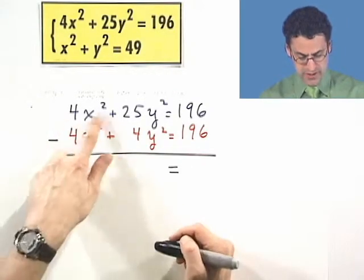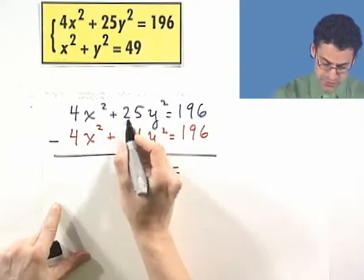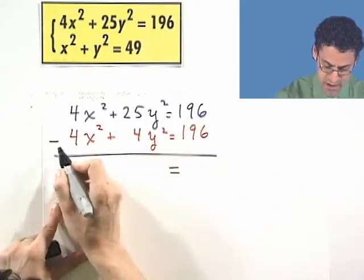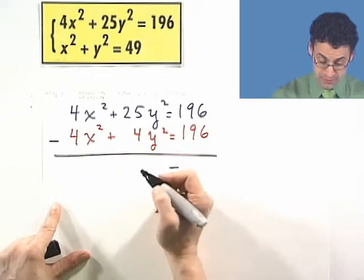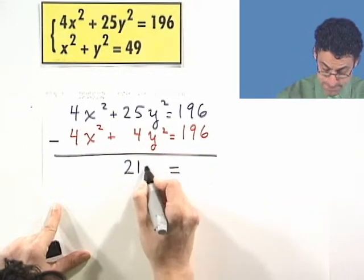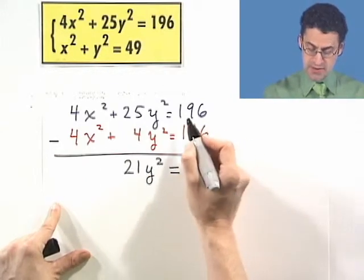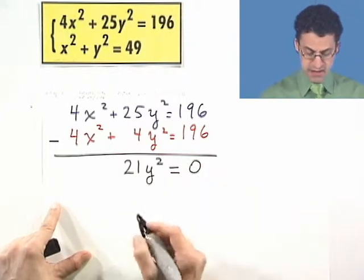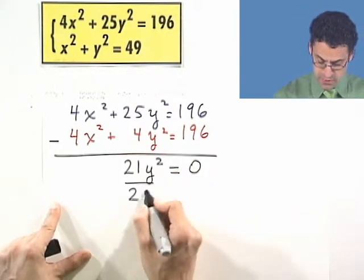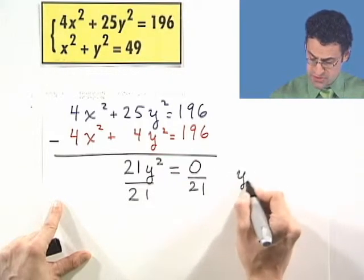But look what happens. When I take the 4x squared minus 4x squared, they drop out, and that's the elimination. And then I'm left with 25y squared minus 4y squared, so I have 21y squared in total. And look at what an amazing cosmic coincidence we have here: 196 minus 196 is 0. This is going to be pretty easy to solve. I'm just going to divide both sides by 21 to undo the multiplication.